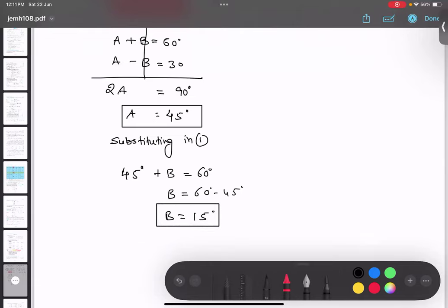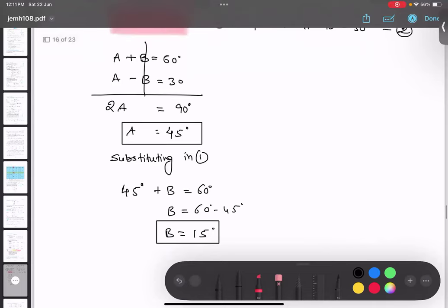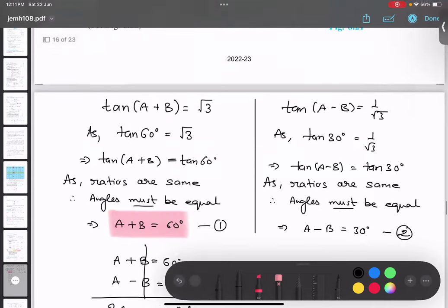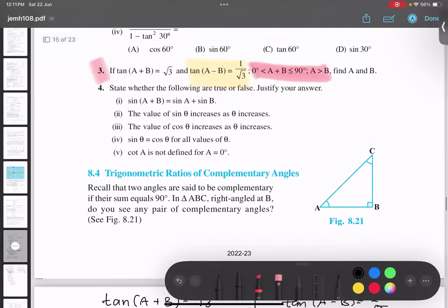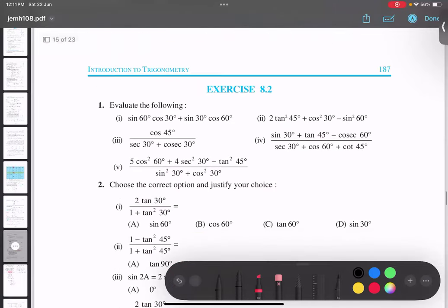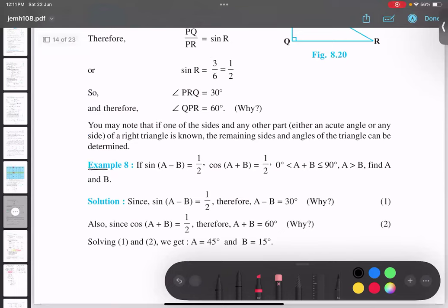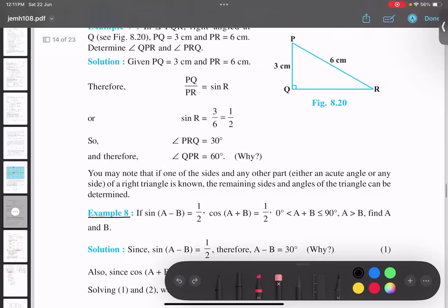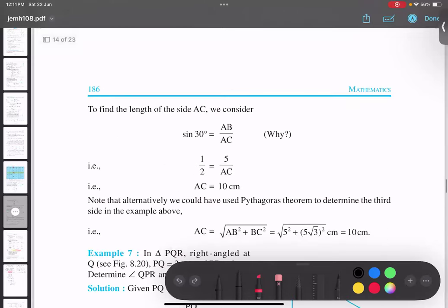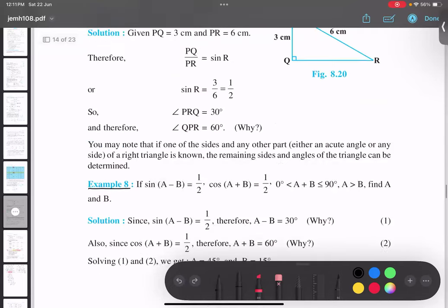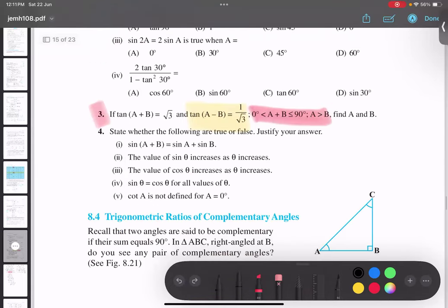Is that thing clear? Any doubt? This is the working for question number three. For your practice you must try example number eight, it is similar in terms of sine and cos, method is same. Example number eight. Now can you see that? Now let us read this thing.